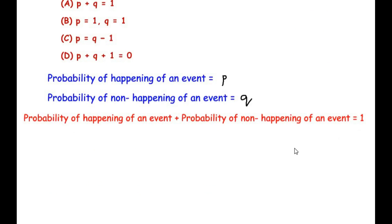So here, since probability of happening of an event is given as p and probability of non-happening of an event is given as q, so substituting it in the formula we get p + q = 1. So this is the relationship between the probabilities in this given question.